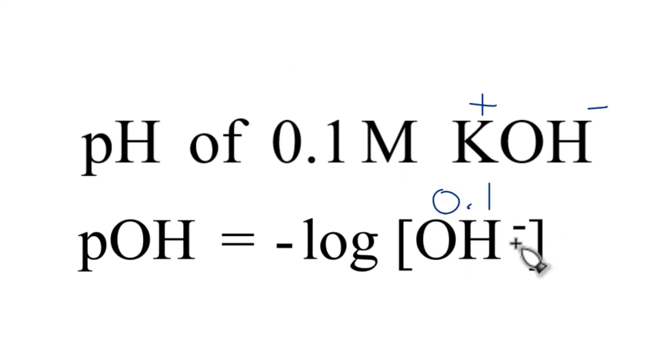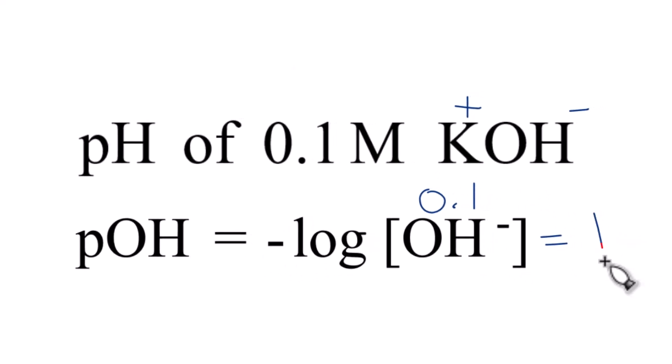The log of 0.1 is negative 1, but then we have this negative here, so that cancels out. pOH is 1.